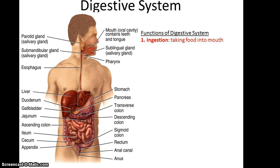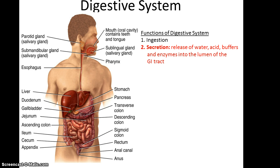Functions of the digestive system include ingestion — that's taking food into the mouth — and secretion: the secretion of water, acid in the stomach, buffers right afterwards, enzymes, etc., into the lumen of the GI tract.